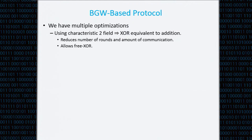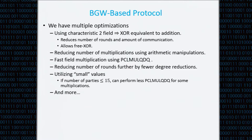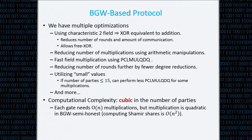We did multiple optimizations for this protocol. The first is that we used characteristic-two fields, which is a significant saving both in the number of rounds and the amount of communication, and it's also important for the FreakStore technique. We also reduced the number of multiplications, used fast field multiplication with the pclmulqdq command, and showed we can reduce the number of rounds further by doing fewer degree reductions. However, all these optimizations don't really tackle the real issue: using BGW for BMR is computationally cubic in the number of parties.